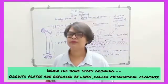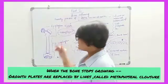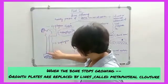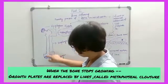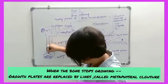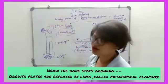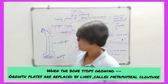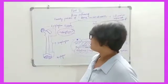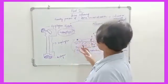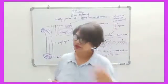What happens when the bone stops growing? These metaphyseal plates are replaced by fine lines. This is called metaphyseal closure. What's the relevance of this anatomy with rickets and osteomalacia? We will now discuss that.